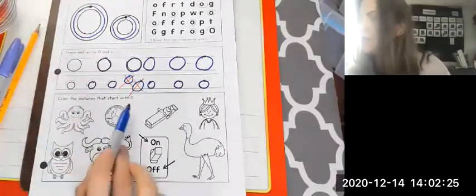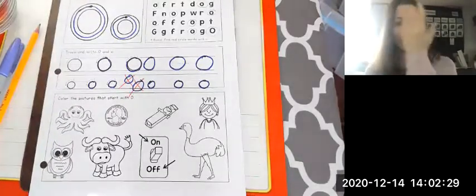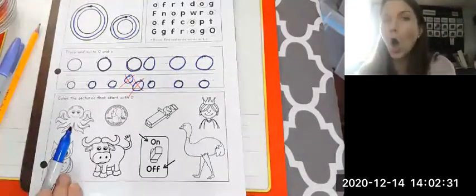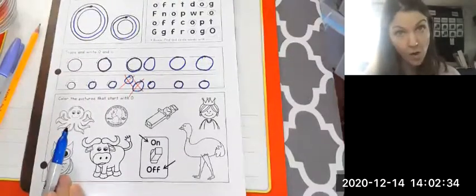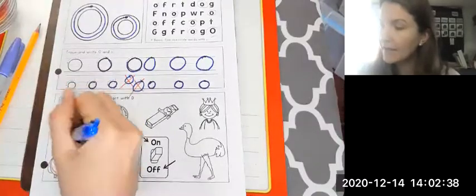Color the pictures that start with O. So O can make an O sound or an AW sound. Look here. Octopus. Does that start with O? Octopus. Yes, indeed-ly-doo.